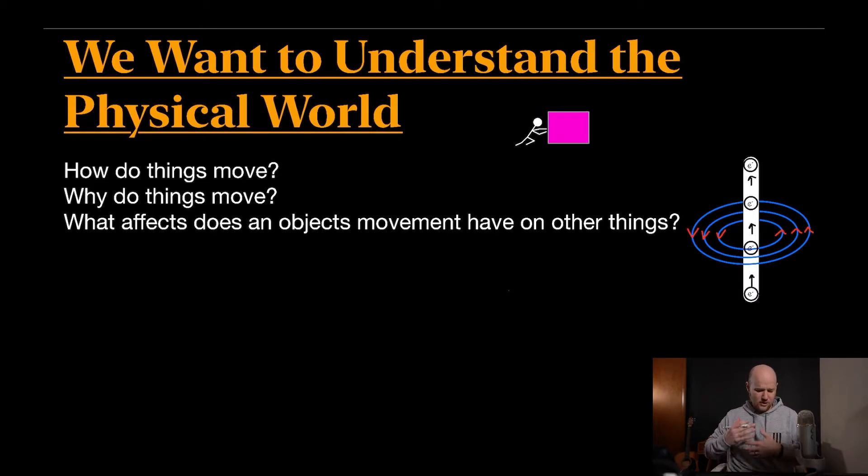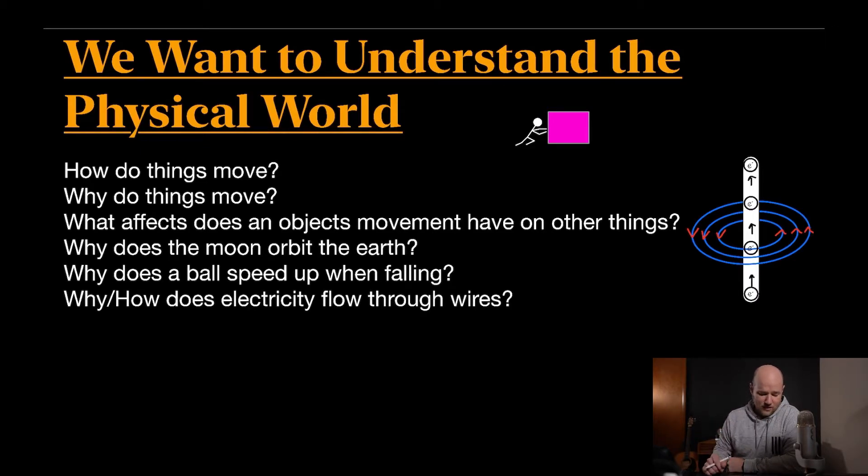So when I say understanding the physical world, a lot of times it has to do with just movement: how do things move? Why do they move that way? A few examples of things moving: why does the moon orbit the earth? That's a question that had been asked, and a lot of people spent a lot of time figuring it out. And pretty much Isaac Newton really was the guy that nailed that one down. Why does a ball speed up when falling? And also, how and why does electricity flow through wires? So that was another thing that was really a big deal, especially in the 1800s when they were first studying electricity. They started figuring out, well, what is the cause of electricity flowing? And why is it flowing?